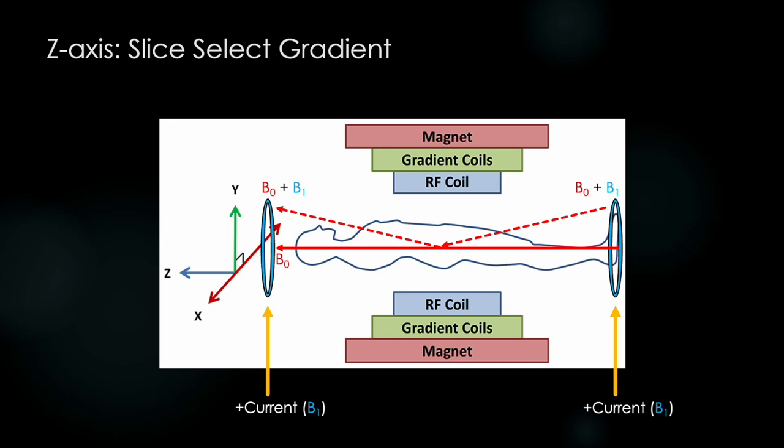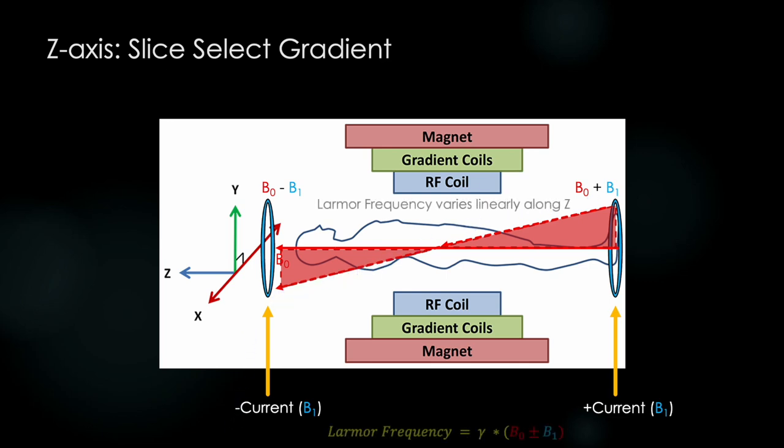So if we run a reverse current through one of the coils, let's choose the coil at the head. We produce a magnetic field in the opposite direction as B0, which will subtract from the main magnetic field. This will give us a magnetic field that looks like this. We have now created a magnetic field that uniquely varies from head to toe, and thus the Larmor frequency will also vary uniquely from head to toe.